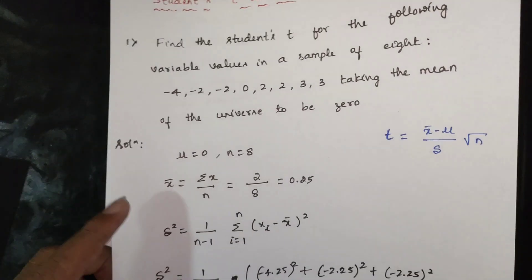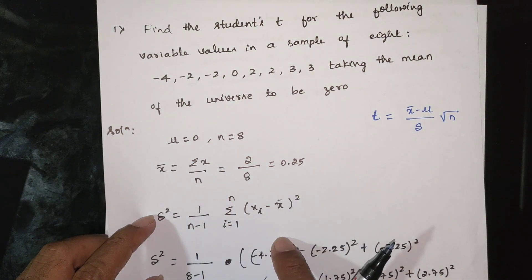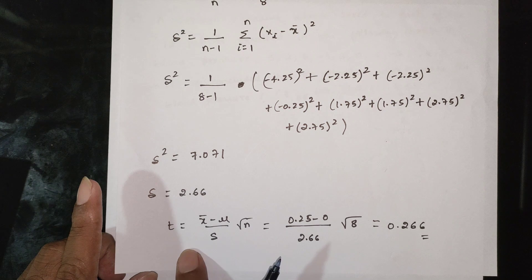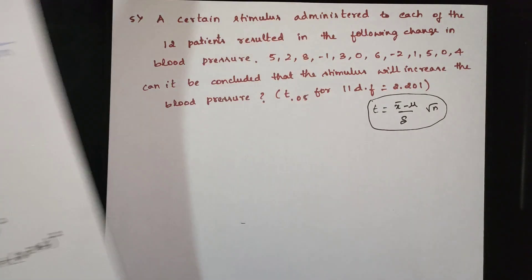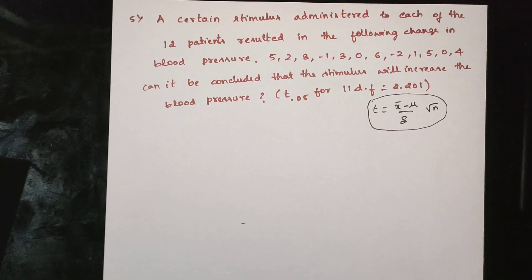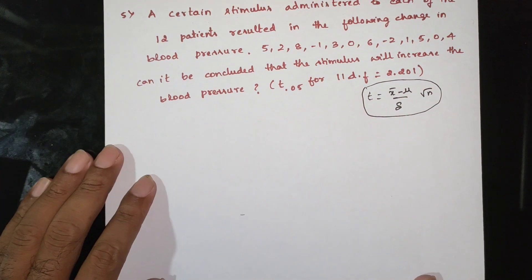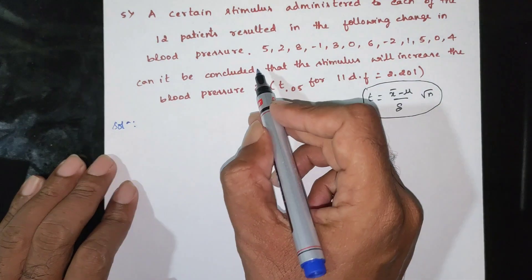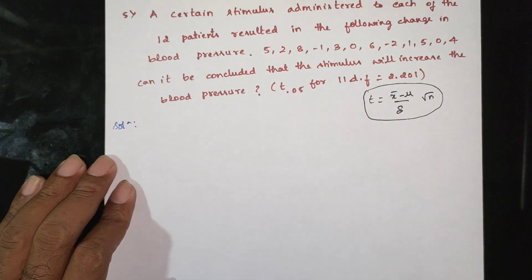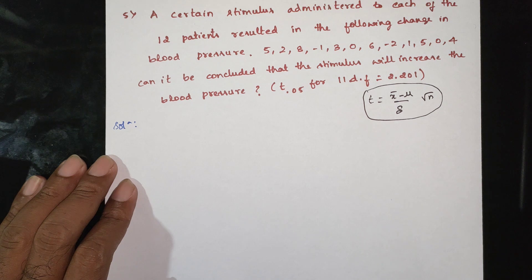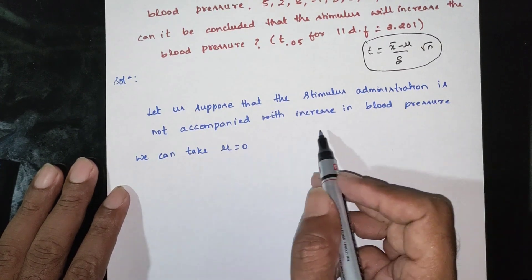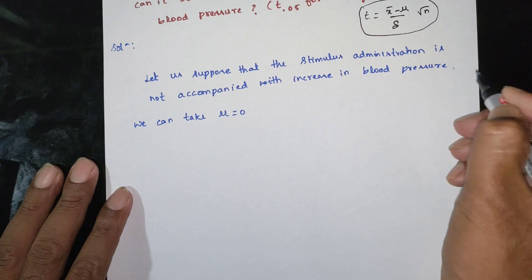We use the sample size and the x values. The formula is x-bar minus mu. Let us suppose that the stimulus administration is not accompanied by an increase in blood pressure — there is no change in blood pressure — so we can take mu equal to 0. The mean of the universe is zero.